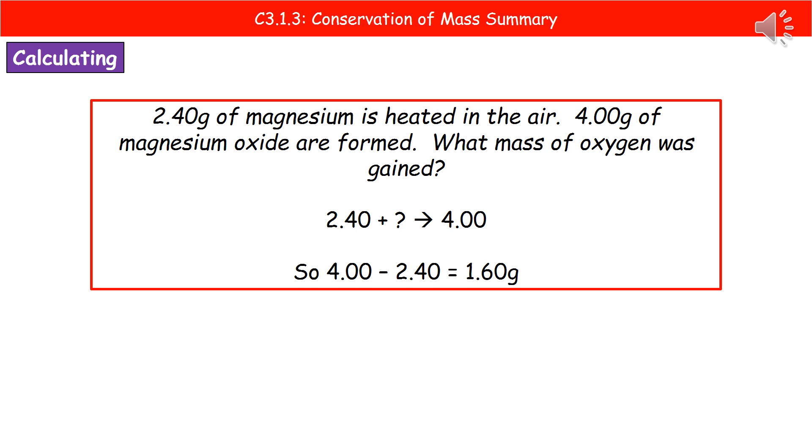So we know the mass of our magnesium, 2.40, and we know the mass of our product, the magnesium oxide, is 4.00. So if we put those numbers in, we've obviously got our unknown, which is our oxygen.